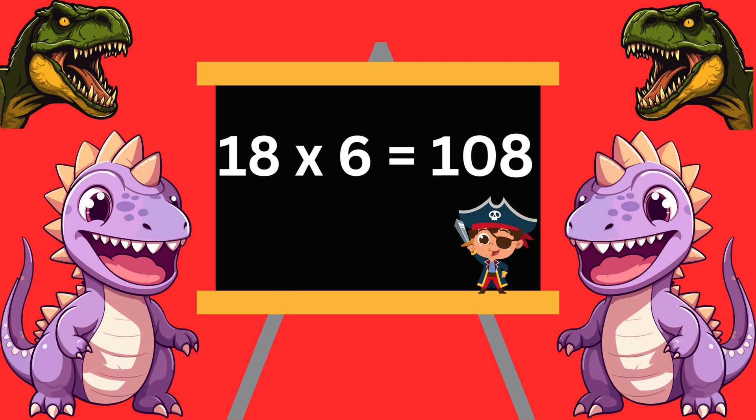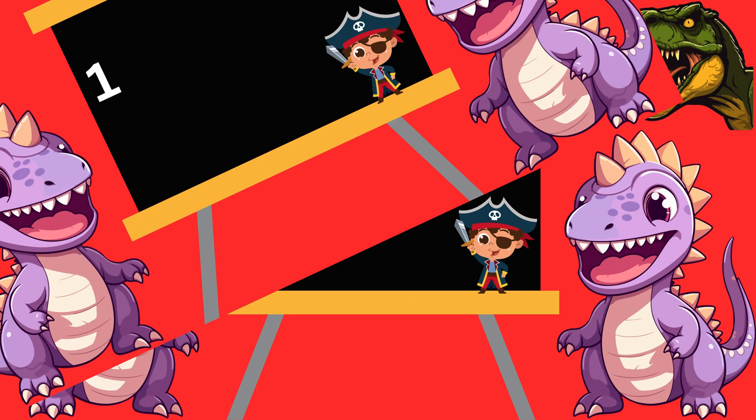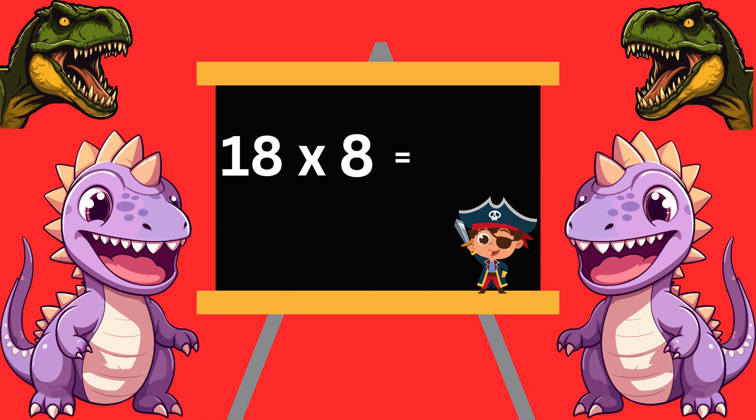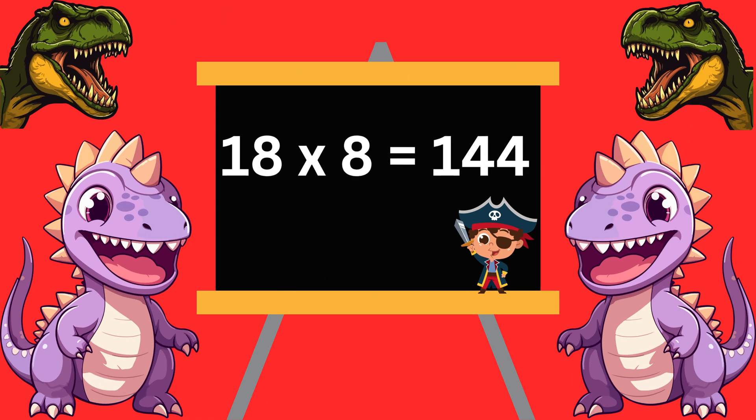18 6s are 108. 18 7s are 126. 18 8s are 144.